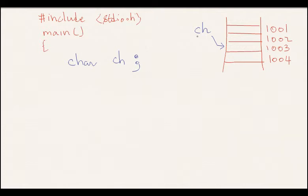You only have to worry about the variables. So when I say ch equals 32, what it does is it goes and assigns 32 to ch, which is mapped to 1003.